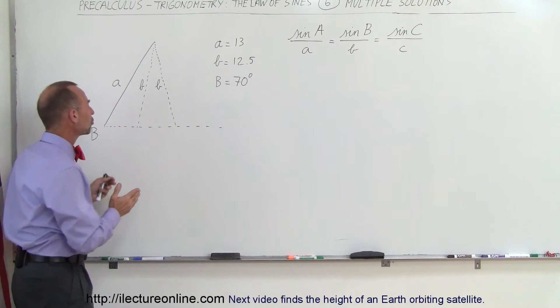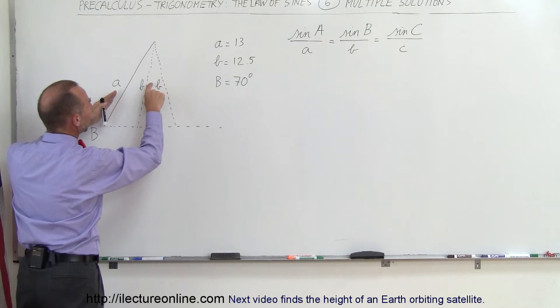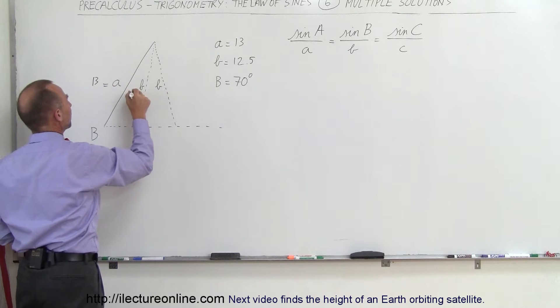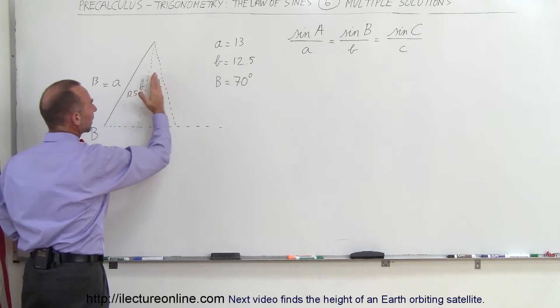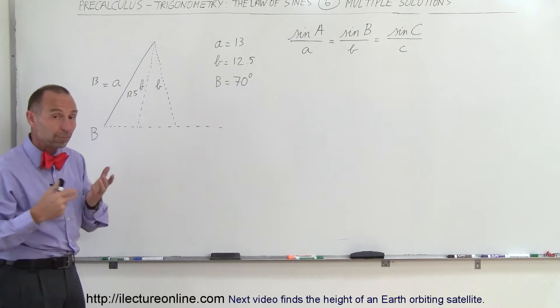It turns out the triangle can look like this, where side A is 13 units and side B is 12.5 units. Side B could either be angled this way or angled that way, and the problem would come out exactly correctly for both cases.